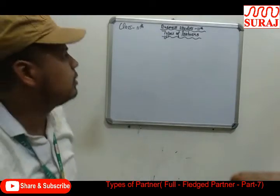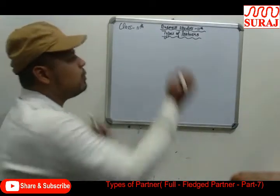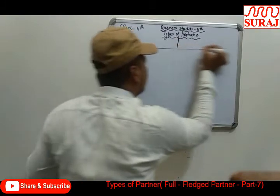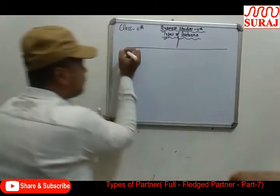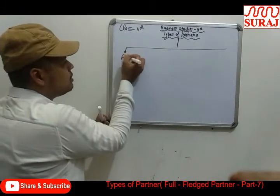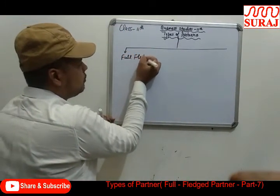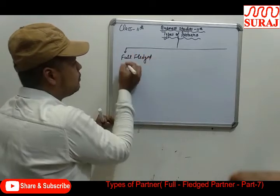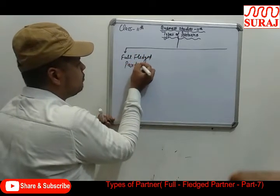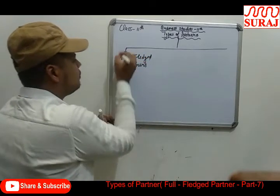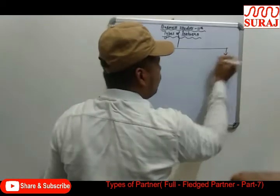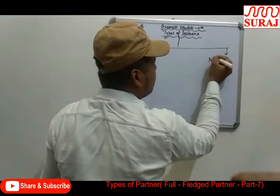Types of partners can be divided into 2 parts: 1. Full-fledged partners, and 2. Not full-fledged partners.